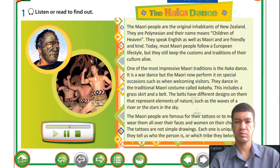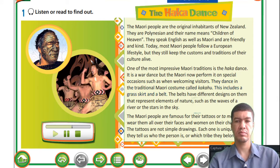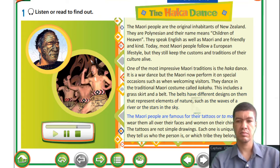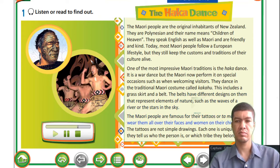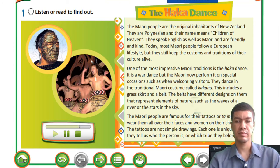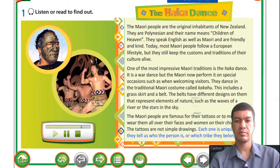The Haka is a war dance but the Maori now perform it on special occasions, such as when welcoming visitors. They dance in the traditional Maori costume called kakahu. This includes a grass skirt and a belt. The belts have different designs on them that represent elements of nature such as the waves of a river or the stars in the sky. The Maori people are famous for their tattoos, or tamoko. Men wear them all over their faces and women on their chin and lips. Each tattoo is unique and tells us who the person is or which tribe they belong to.